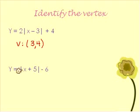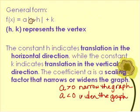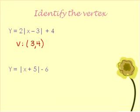For the next one, there's a positive 5 inside, but remember it is a minus in the formula. So it will be opposite sign for the h value — a negative 5. And then the k value will be a negative 6. And that's my vertex.